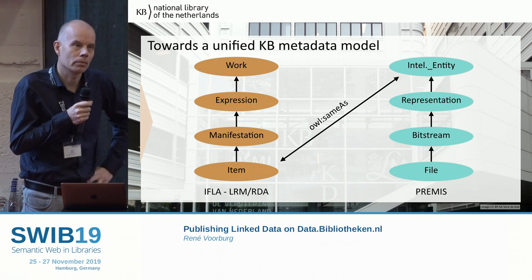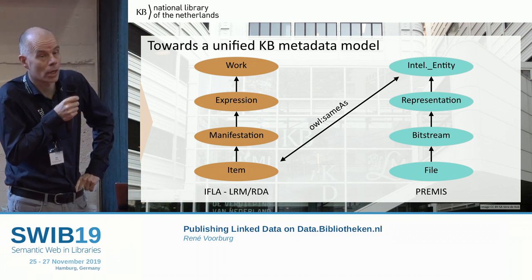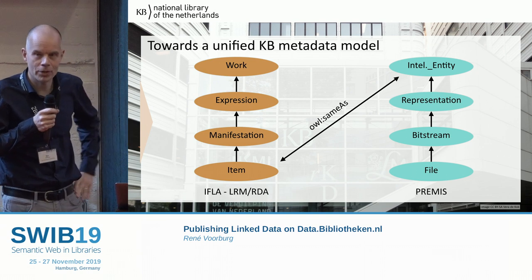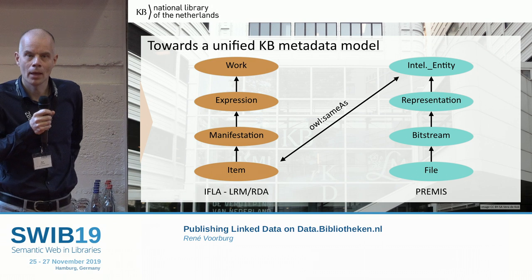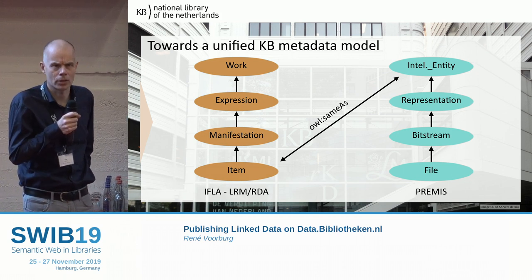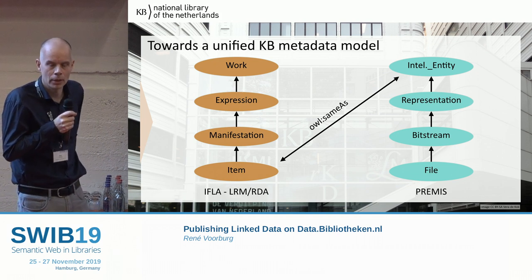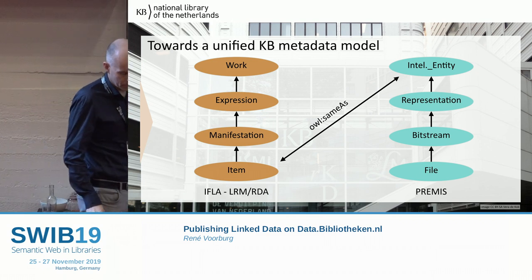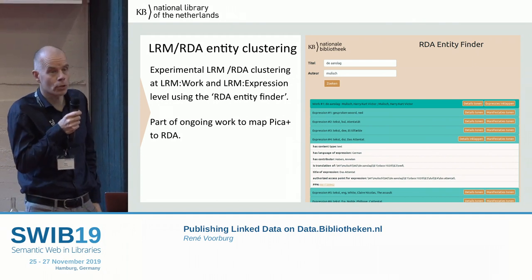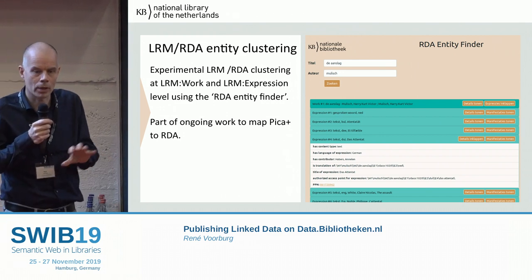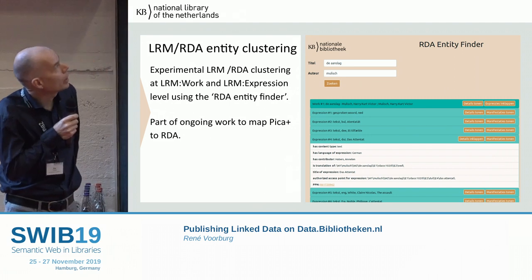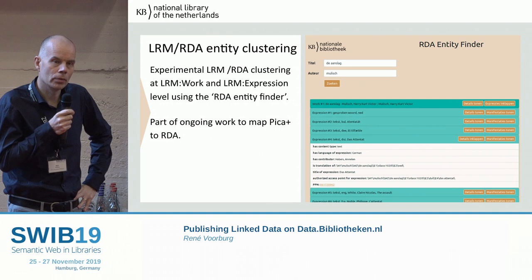Other complexity behind this seemingly simple picture includes questions like: when we have a representation — for example, an EPUB document — and we want to convert that to another format and create a new representation, does that create a new Item, or can we say it's the same Item? Many catalogers will say it creates a new Item, but perhaps that's not a handy approach. Also, when we want to use IFLA LRM, we can't just publish Manifestations — we also want to publish Expressions and Works. So we have to cluster our records into those higher levels. We are now experimenting with tools we're creating ourselves to generate Works and Expressions — that's the RDA Entity Finder.